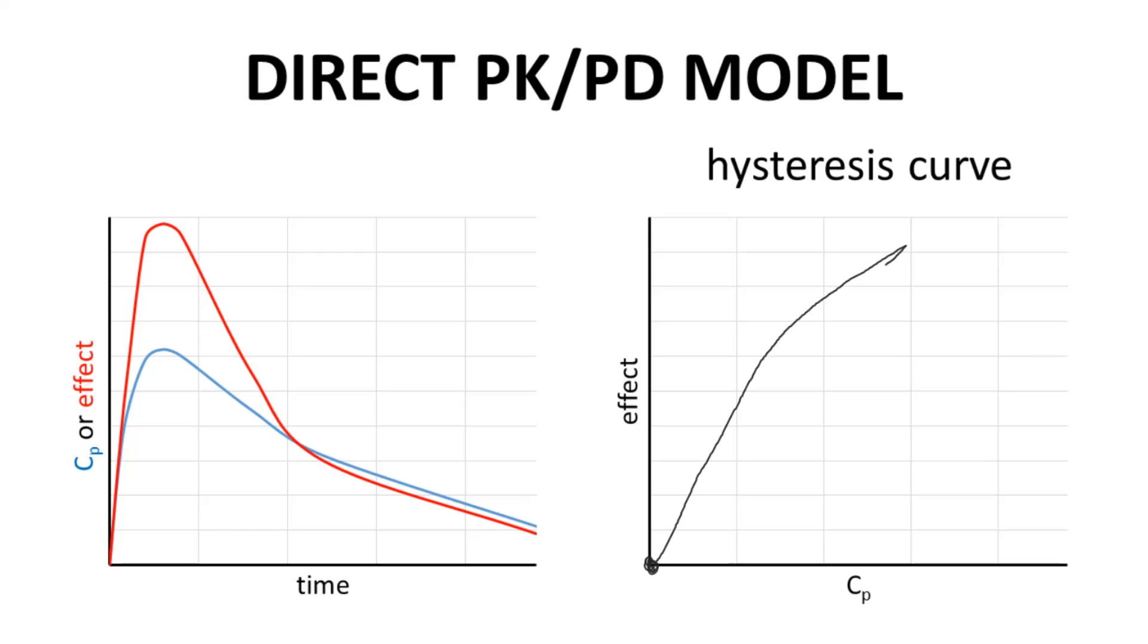As CP drops, effect also drops and we actually retrace the same line down to the origin. The point is that the line follows the same path going away from the origin as it does during the return.